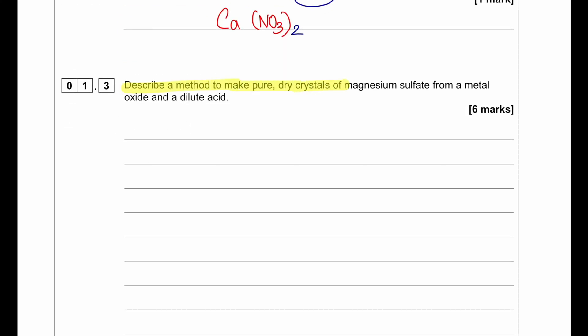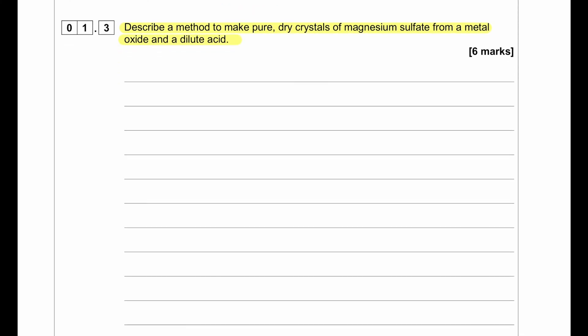Describe a method to make pure dry crystals of magnesium sulfate from a metal oxide and dilute acid. For this 6-mark question, we need to write at least 6 points. I'm going to give you an answer with more points so that even if you forget a few during the exam, you will still be able to get your 6 marks.